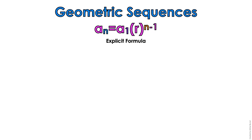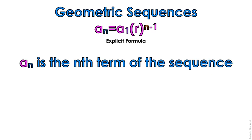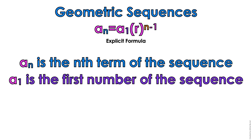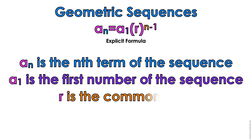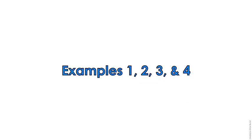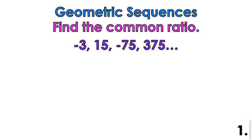With geometric sequences, we have the explicit formula where a sub n is the nth term of the sequence, a sub 1 is the first number of the sequence, and r is the common ratio. In examples 1, 2, 3, and 4, we're going to find the common ratio.